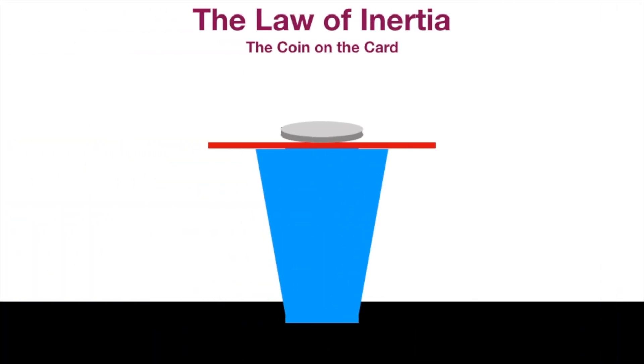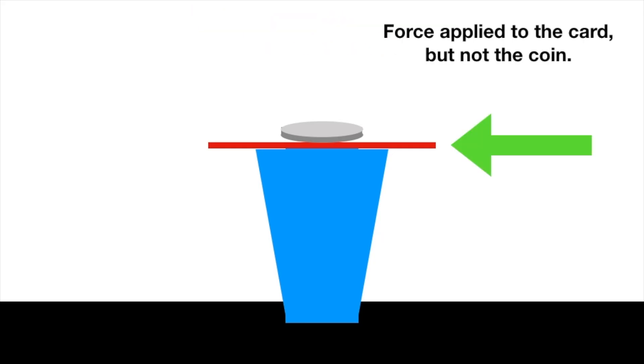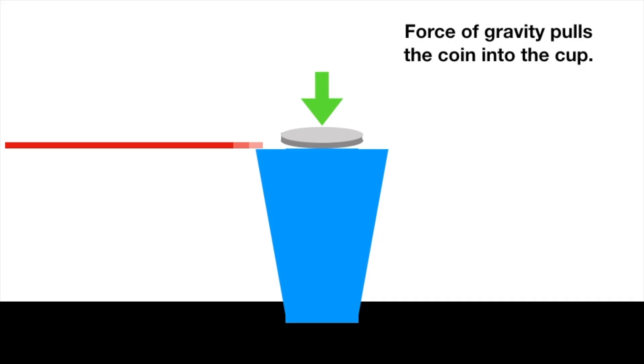The coin in the card trick is a classic example of Newton's first law, the law of inertia, in action. A force is applied to the card, but not the coin, so the card moves out of the way. Then the force of gravity pulls the coin down into the cup.